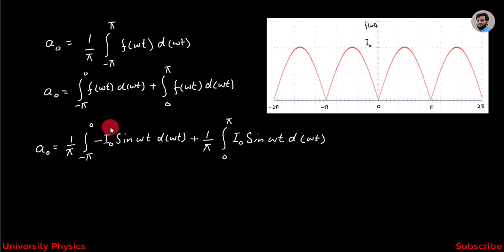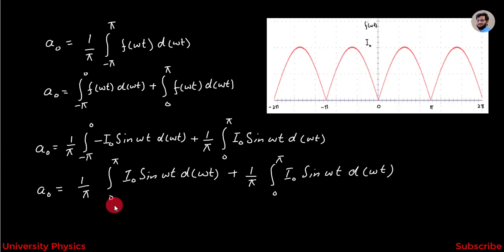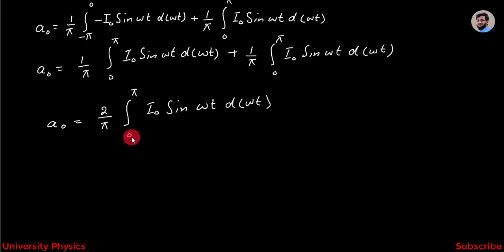Now if we look at this integration, the limits are from -π to 0. I have to rewrite this from 0 to π, so by writing this, the minus will become plus, because when we reverse the limits we get an extra minus sign. So we will get a₀ = (1/π) integration from 0 to π of I₀ sin(ωt) d(ωt) plus (1/π) integration from 0 to π of I₀ sin(ωt) d(ωt). Both terms are from 0 to π, so we can add them and get a₀ = (2/π) integration from 0 to π of I₀ sin(ωt) d(ωt).